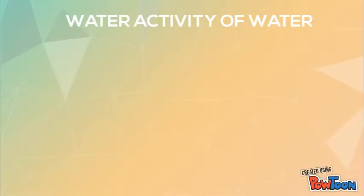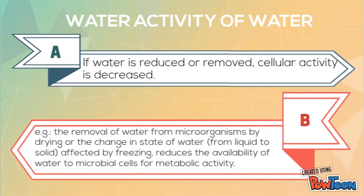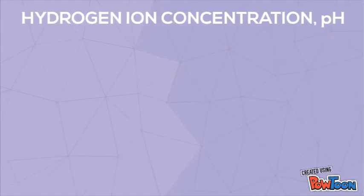Water activity is a measure of the availability of water for biological functions and relates to water in free form. Hydrogen ion concentration can differ in a system depending on what acid is present.